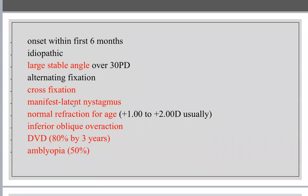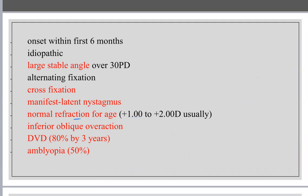Normal refraction for these cases is plus one or plus two hyperopia. If you have more than plus two hyperopia, it may be the underlying cause for developing strabismus via accommodation and convergence. Inferior oblique overaction is a common association, evident by about one year. DVD (dissociated vertical deviation) occurs in 80% of cases by age three years. Amblyopia occurs in approximately 50% of patients with esodeviation.